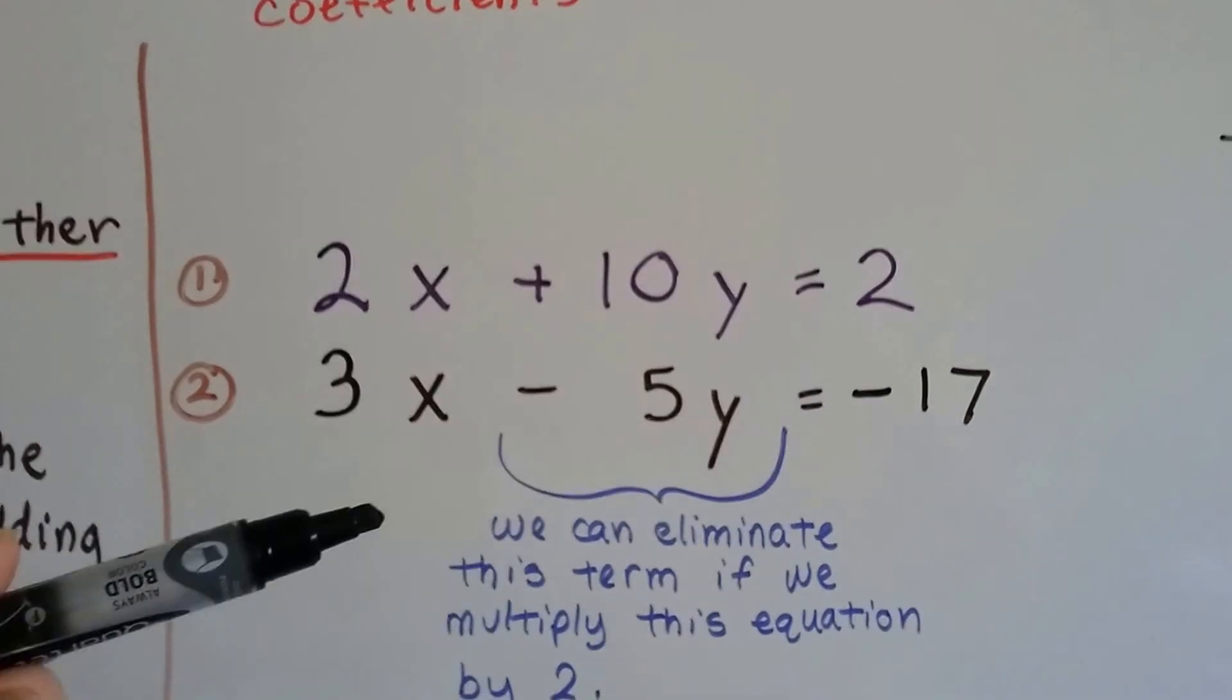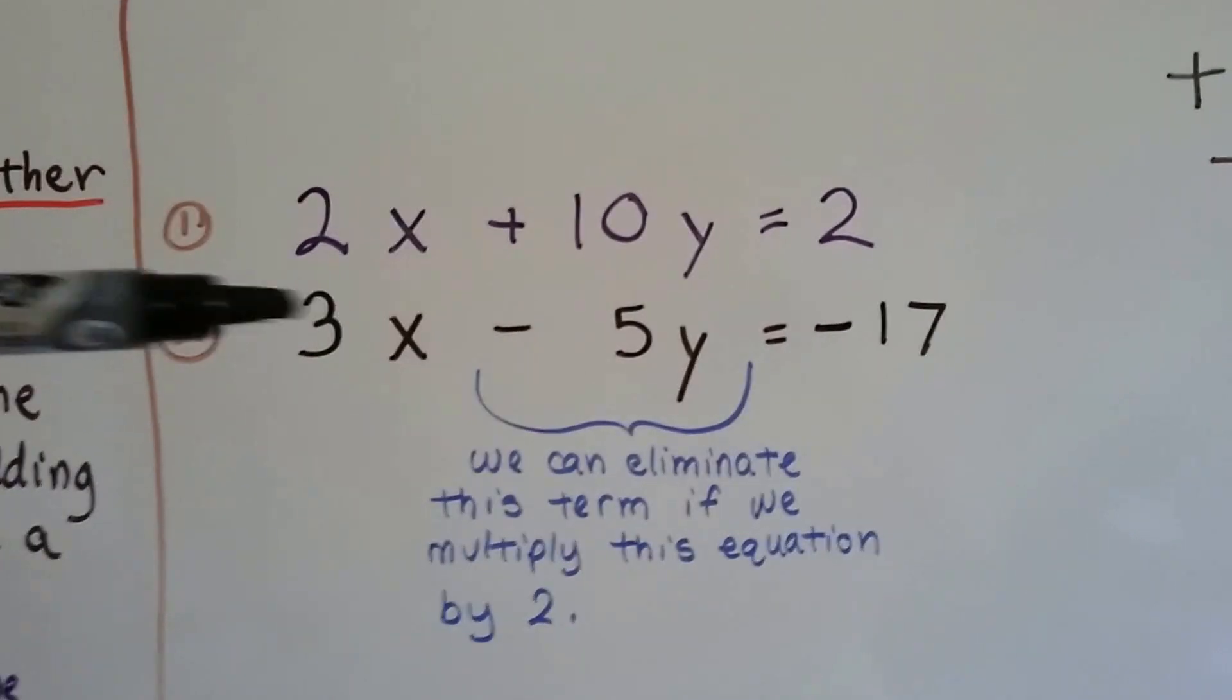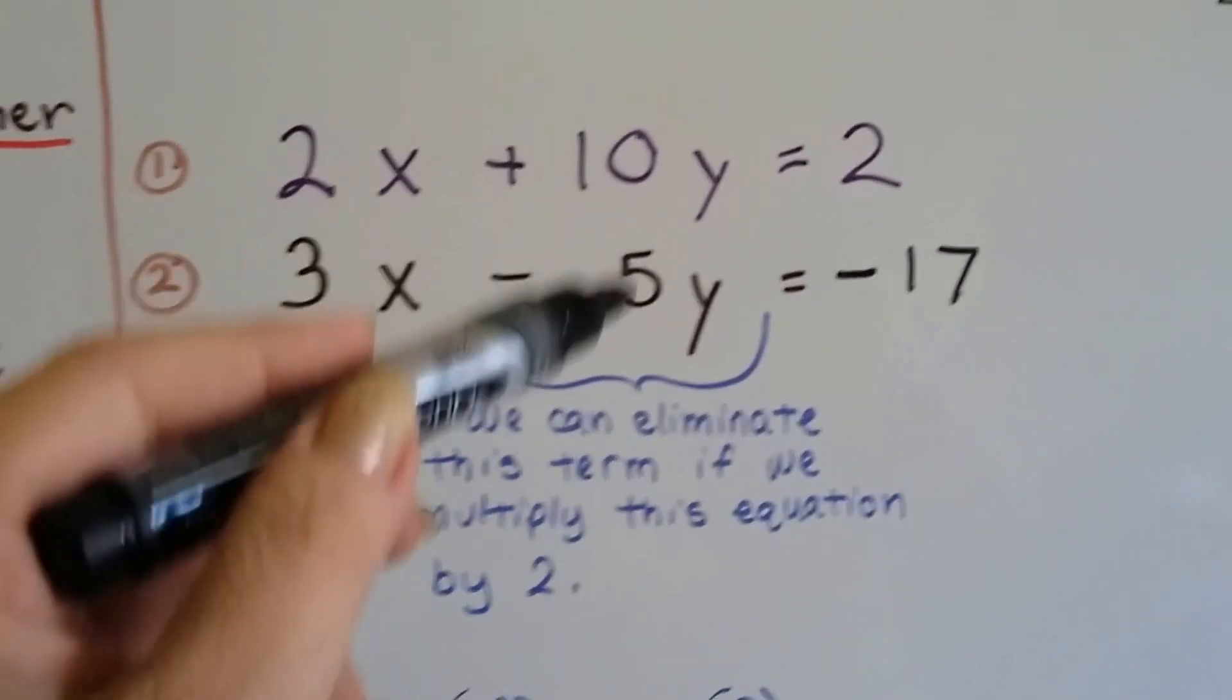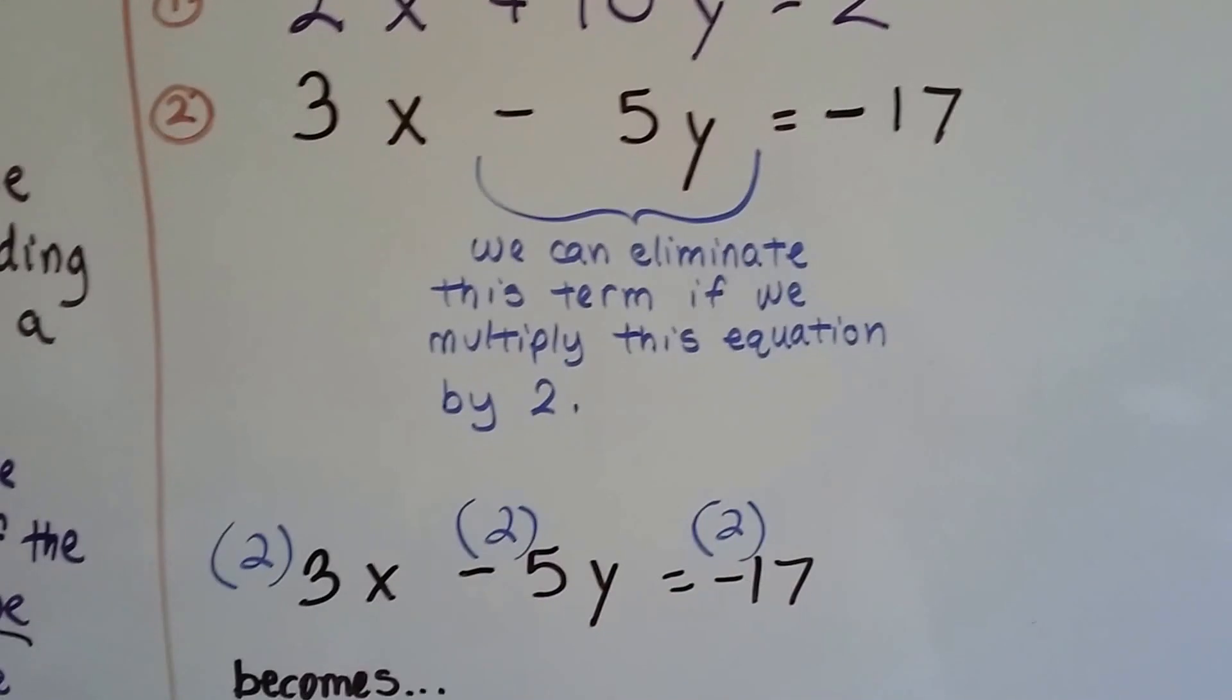So the best thing to do is we can eliminate this term if we multiply this equation by 2 because that's going to raise this 5 to a 10. Then we'll have a zero pair. So that's what we do.